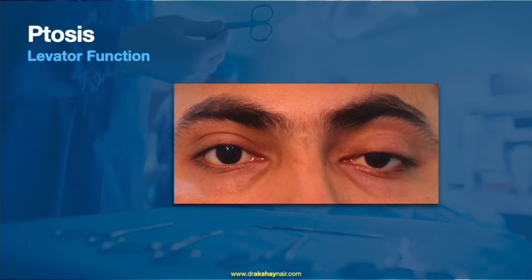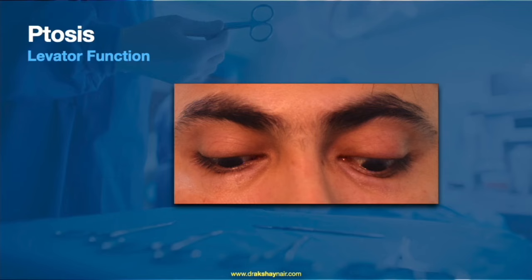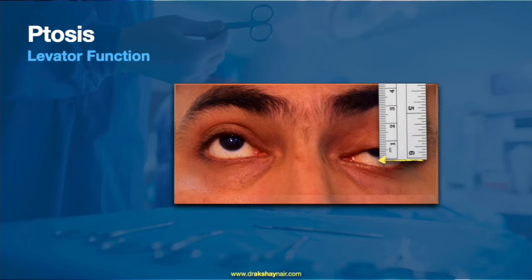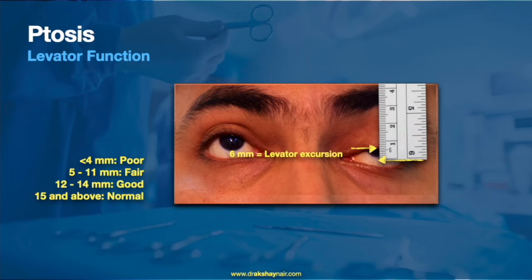One of the most important measurements in ptosis assessment is levator function. With the patient in primary position — no neck flexion, frontalis relaxed — the patient is asked to look down and a ruler is placed alongside; the marking at the lid margin is noted. The patient then looks upward using only their eyes, and the new lid margin position is recorded. The total distance traveled is the levator excursion. Less than 4 mm indicates poor function; 5-11 mm is fair; 12-14 mm is good; and 15 mm or above is normal.